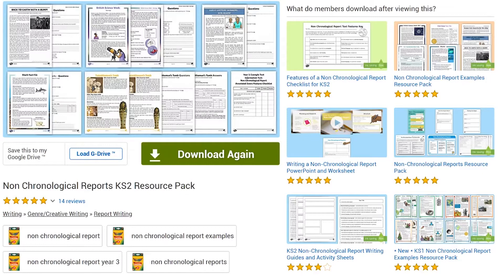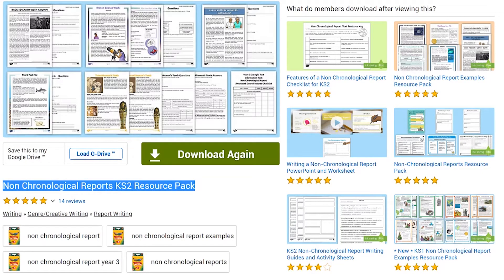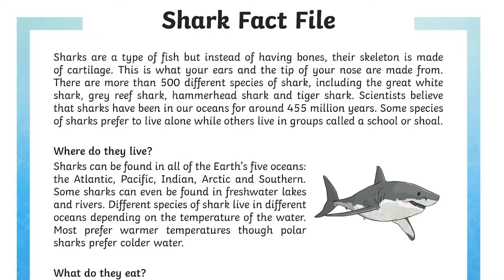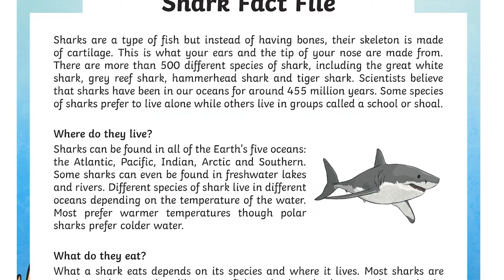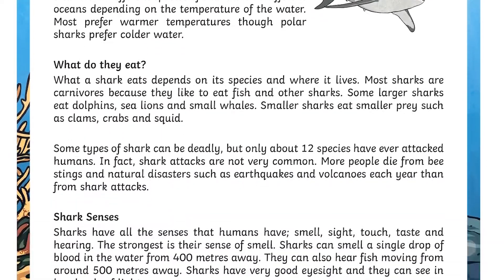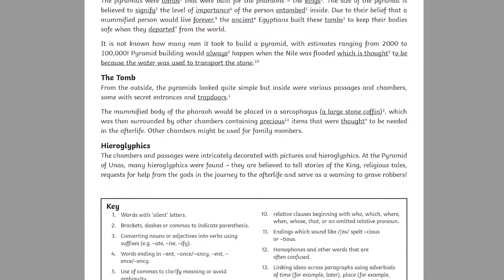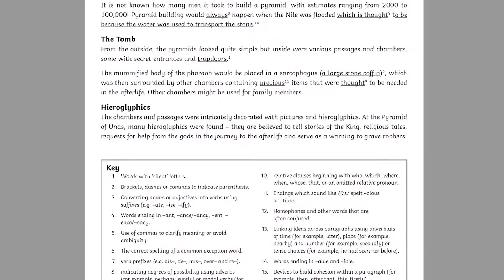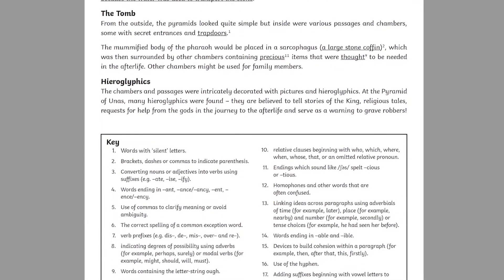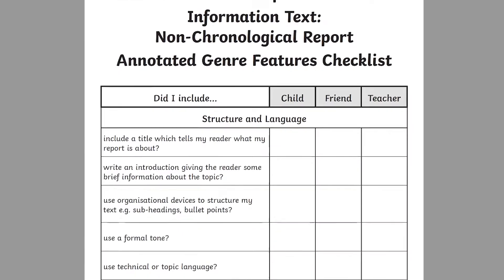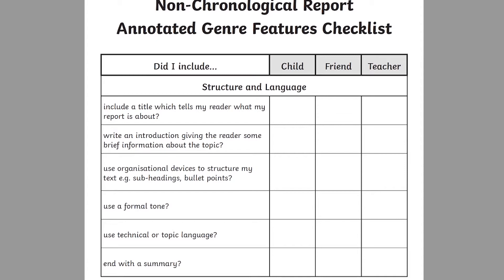There are also packs that focus on a range of other non-chronological report types, including fact files. How do fact files differ from newspaper reports? Use this features explainer to remind your child of grammatical features in information texts. And this checklist is useful for reference when reading a non-chronological report, or as part of peer assessment after writing one.